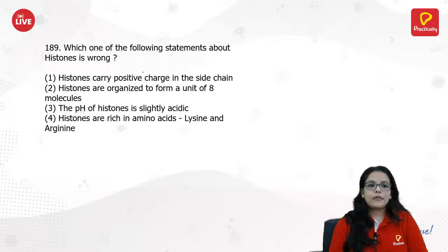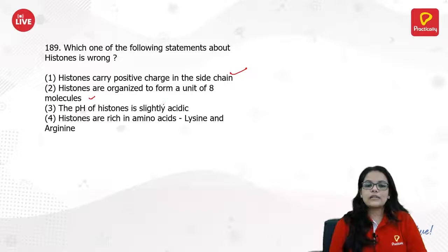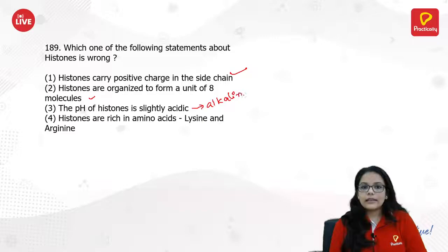Which of the following statements about histones is wrong? Histones carry positive charge — yes. Histones are organized to form 8 molecules — yes. pH of histones is slightly acidic — no, it is alkaline. We all know histones are alkaline in nature.